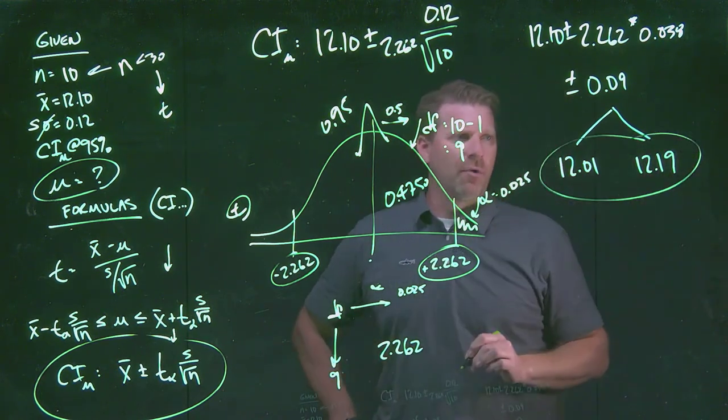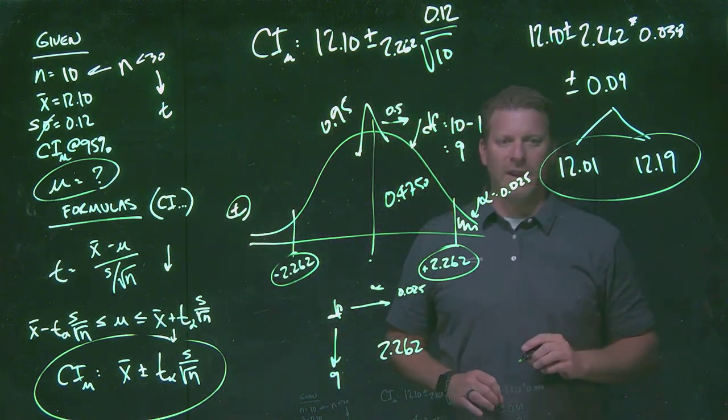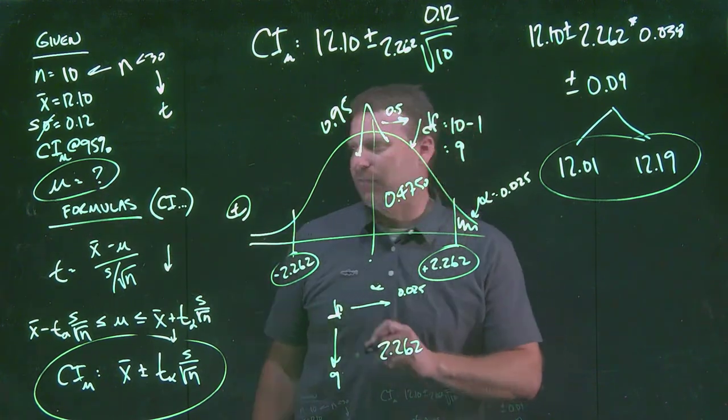So to summarize, what we would then say is we are 95% certain that the truth, the value that we're looking for, the population mean, exists between the 12.01 and the 12.19.